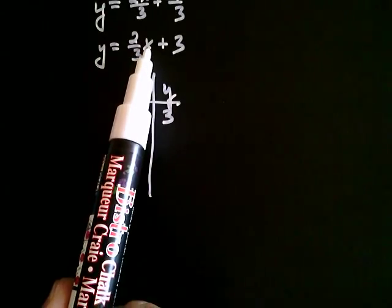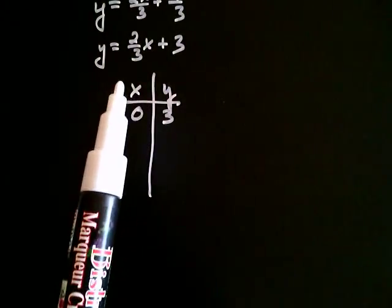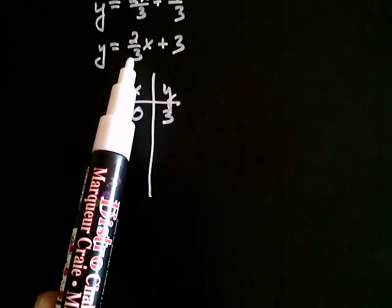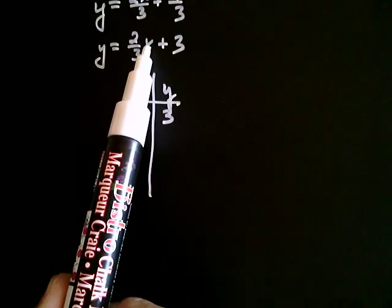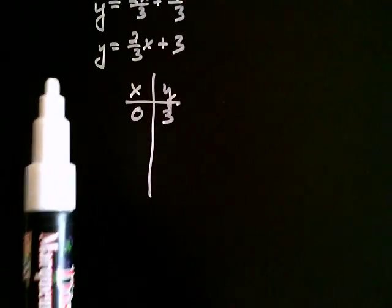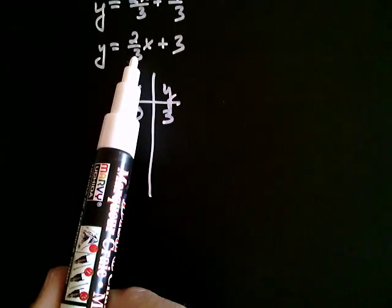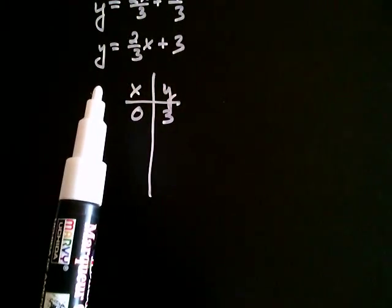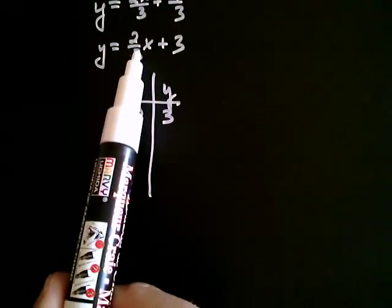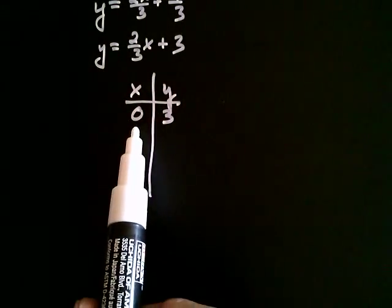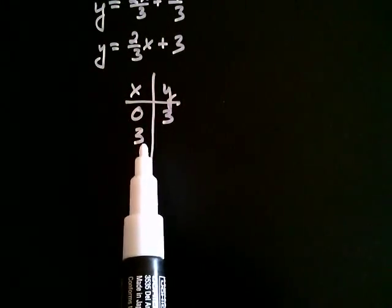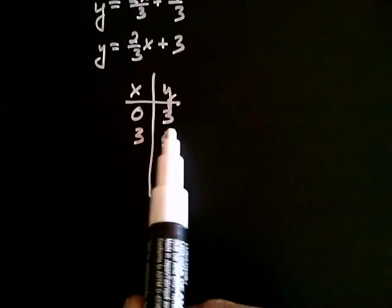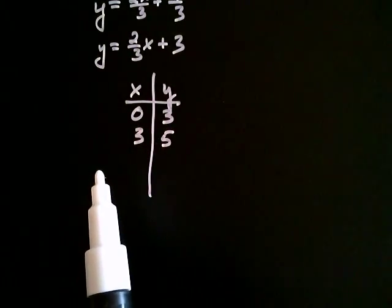How about we choose another value for x that makes this simpler? What if x was equal to three? That would be a good choice because then I could take three and divide it into the three, and the fraction would clear. If x is three, three would go into three once, and one times two would be two. So I'd have two plus three, which is five. That is, when x is three, y would be five.